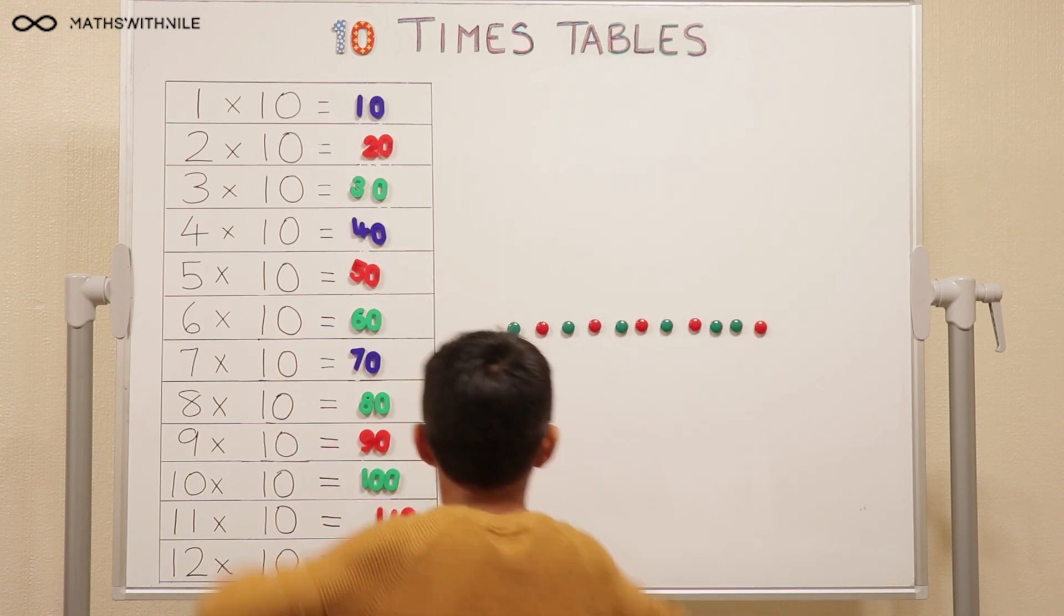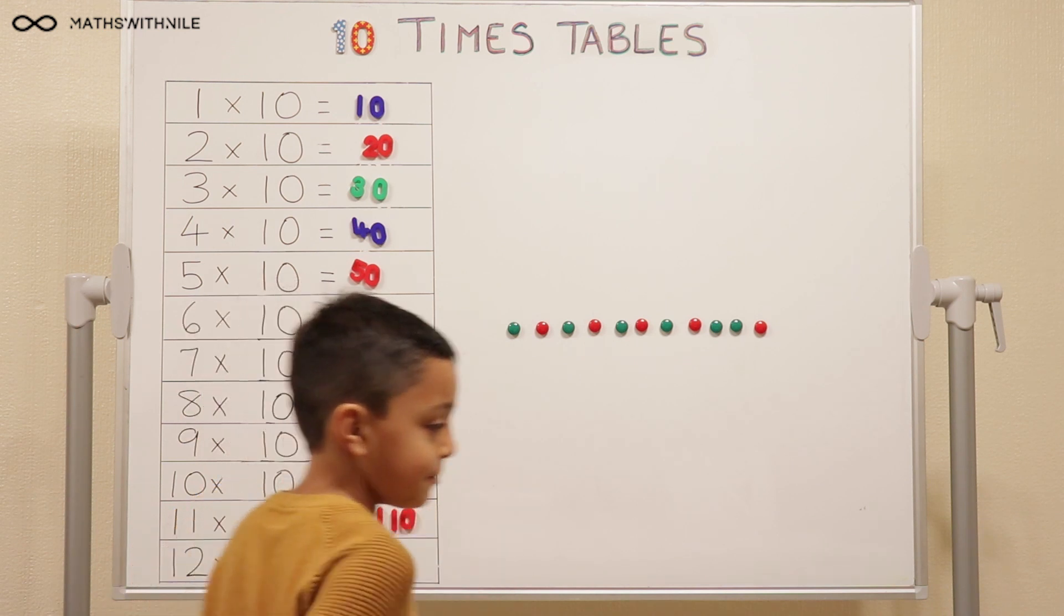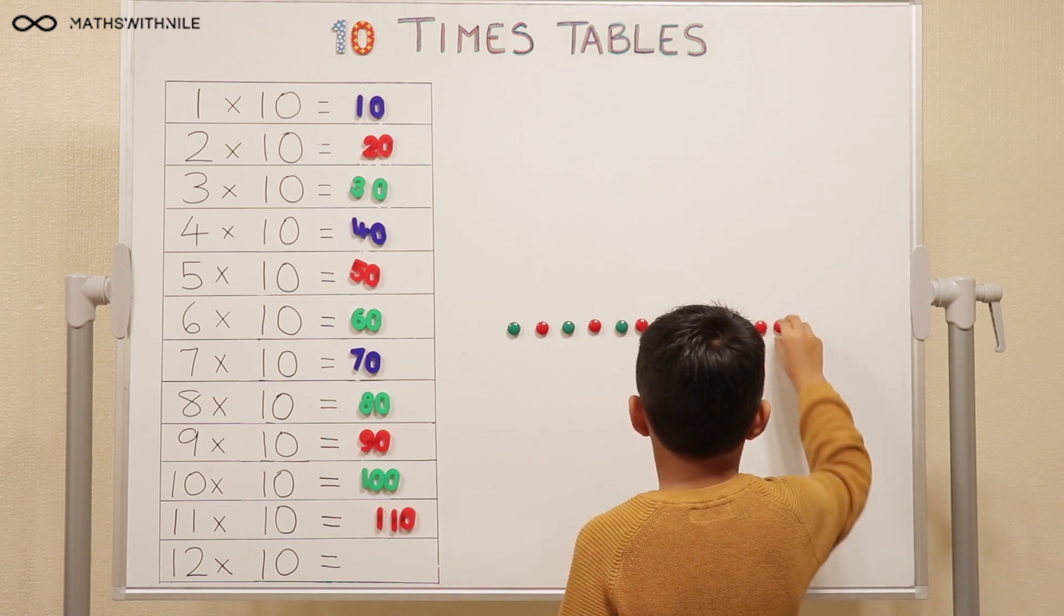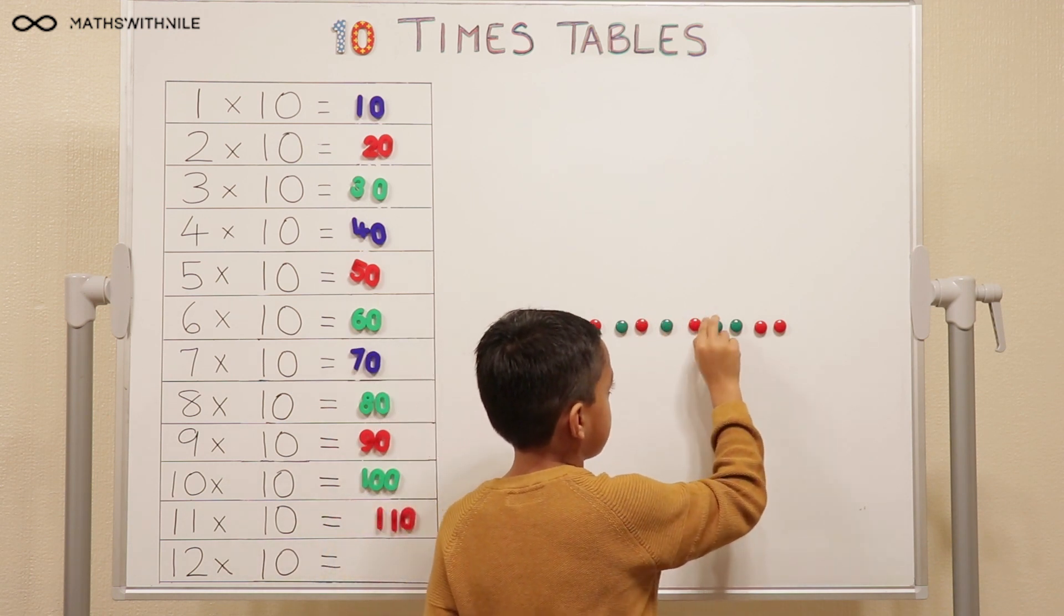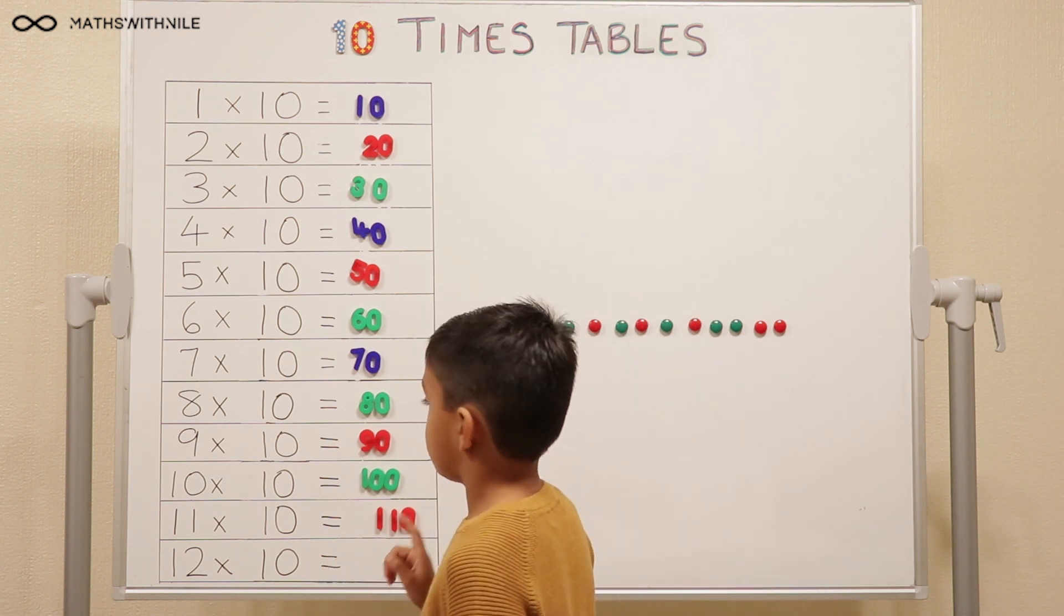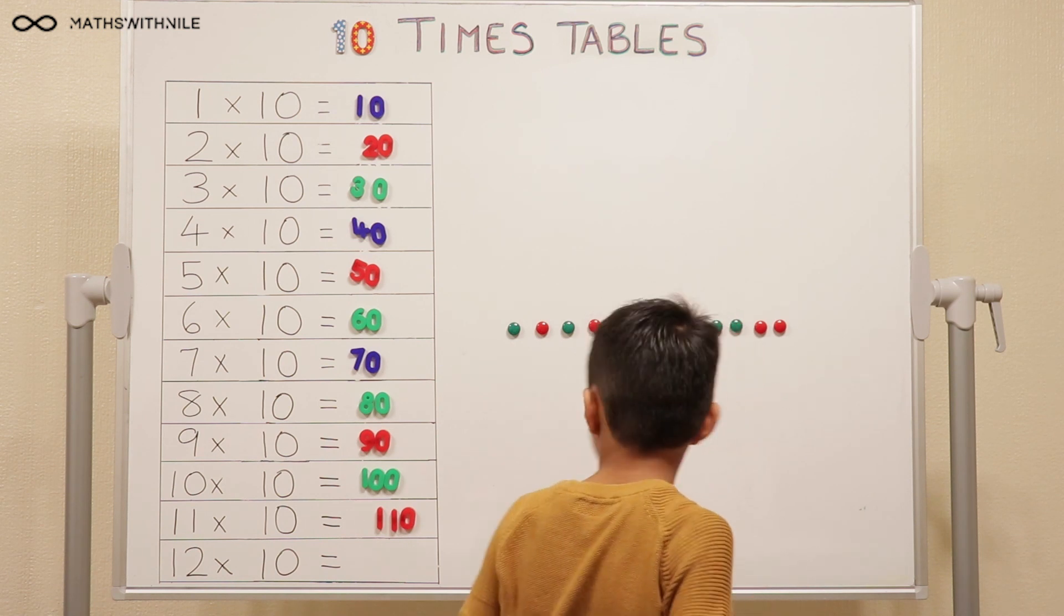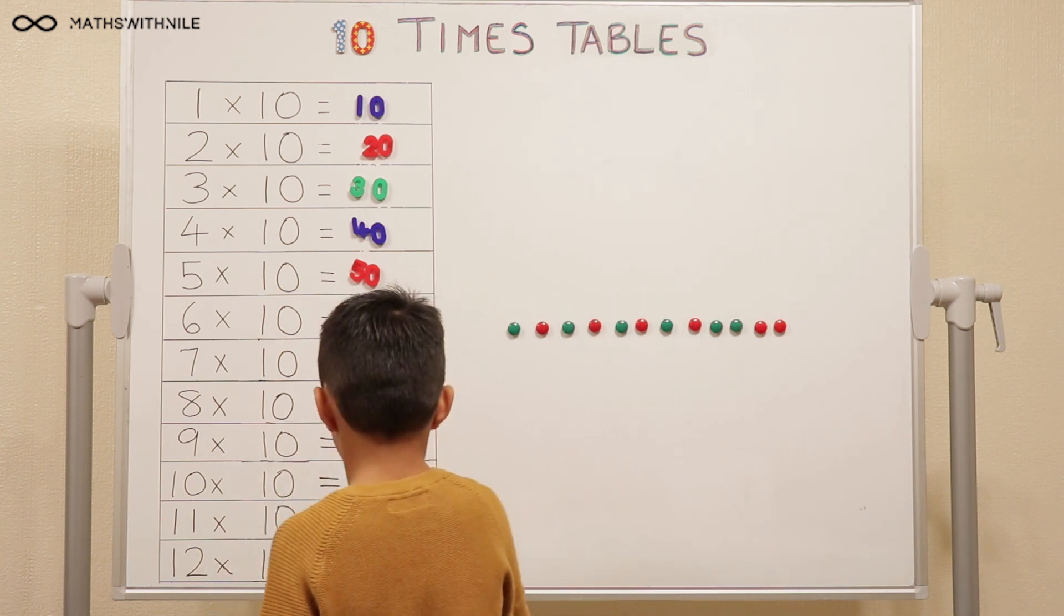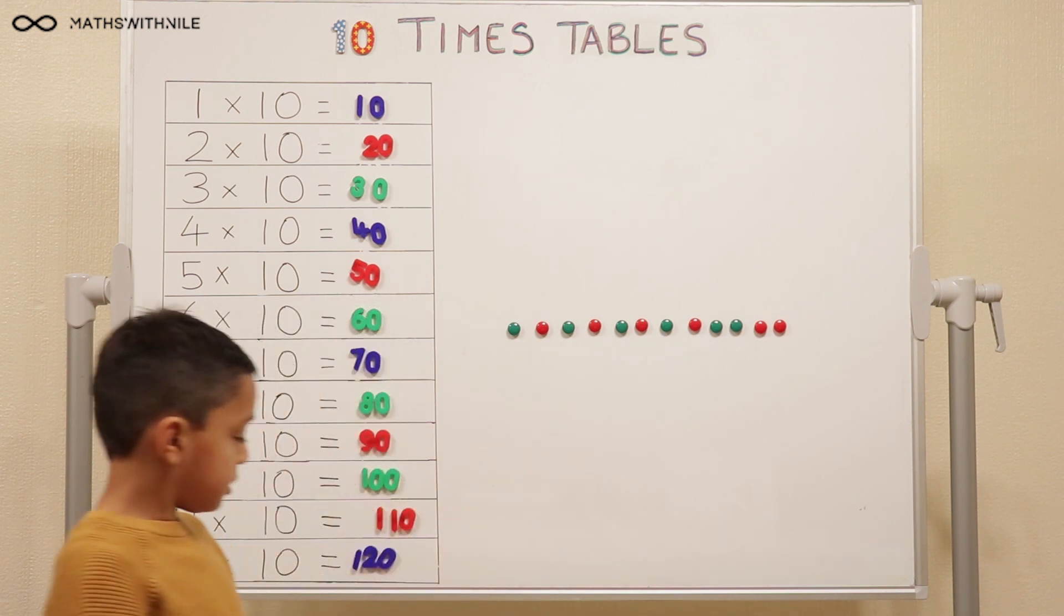So let's do that same method for 12 times 10. So how many counters do we have on the board? 11. So how many more do we need? 1. So we have 12 now. So count up again for us. 10, 20, 30, 40, 50, 60, 70, 80, 90, 100, and 110, and 100, and 120. 120, so put your answer on the board, and then let's have a conversation. 1, 0, 2, 0. 120. 1, 2, 0. Okay, stand to the side so we can see. 120. 120. Good.